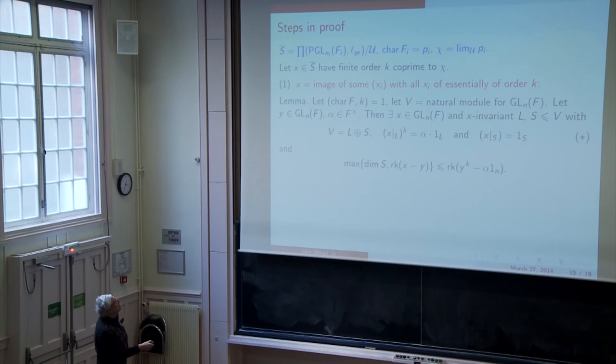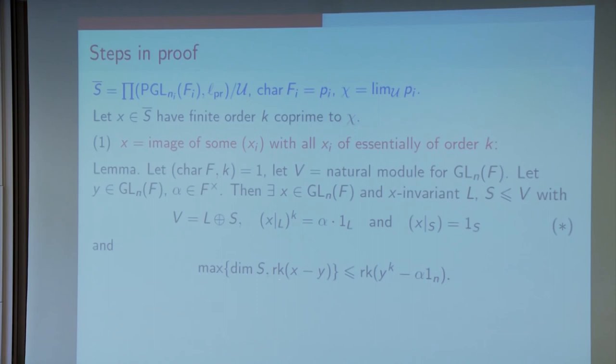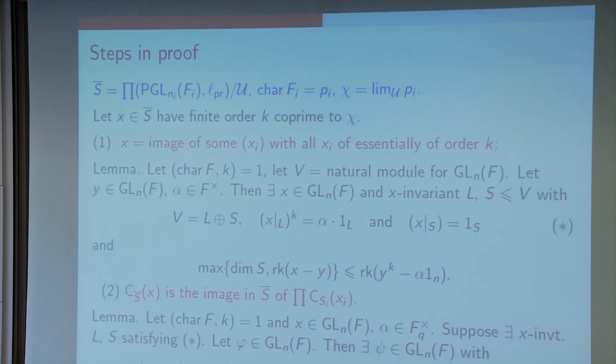And the maximum of these two dimensions here is less than or equal to that dimension. So, why might that possibly be of interest? Well, Y is supposed to be close to being 1 in the projective group. So Y to the K is close to being α times the identity for some element α. This rank is going to be small. And what we're saying is that you can find a nearby X. Its rank, the rank of this difference, is tinier than that thing there. And also, the rank, this dimension of this small space, is really small. And how long is the proof of that? I think it's about four or five lines. It's not very difficult at all.